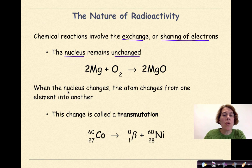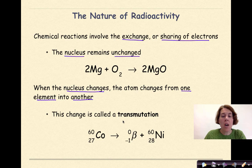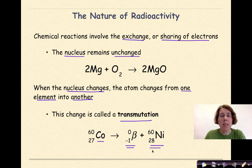When the nucleus changes, however, the atom changes from one element into another. This is called transmutation. So for example, here I have cobalt-60 undergoing beta decay to form nickel-60. We will talk about how this process works later on in future tutorials.